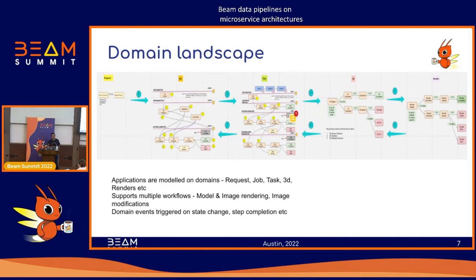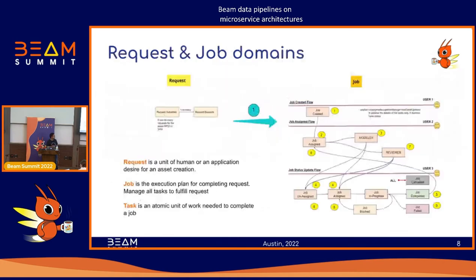This domain model is not created for a single application — it's a generic model which supports various workflows, including creation of a 3D model, an image rendering pipeline, or an image modification pipeline. The small boxes you see in these domains are domain events, triggered during a state change or completion of a step in the workflow. For example, think of a user who wants to render an image — they submit a request, which triggers a 'request submitted' event.